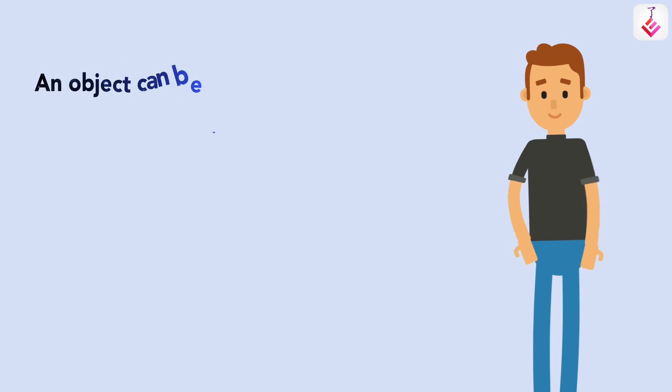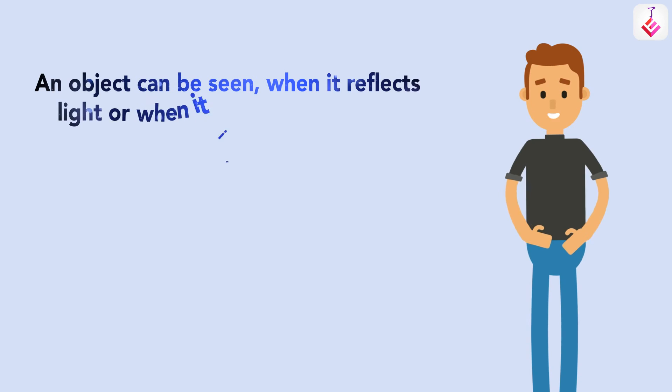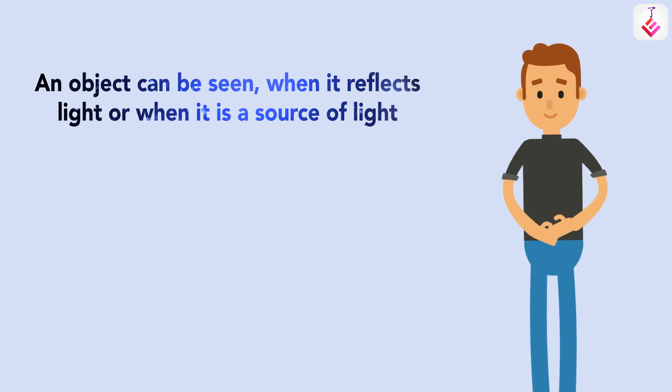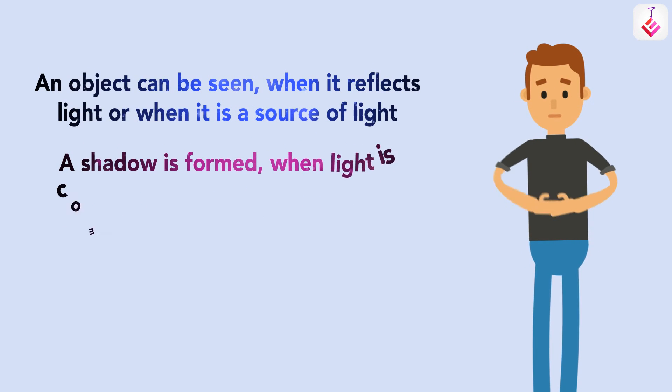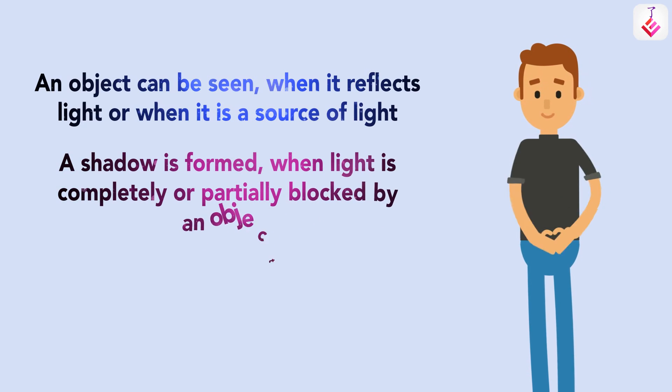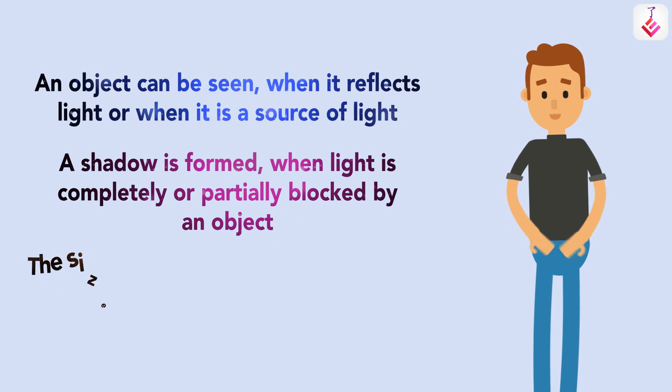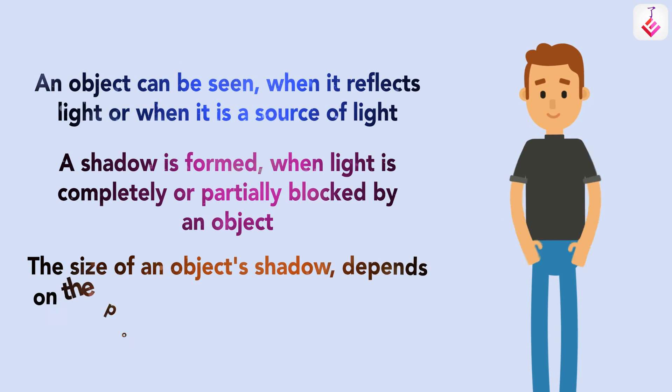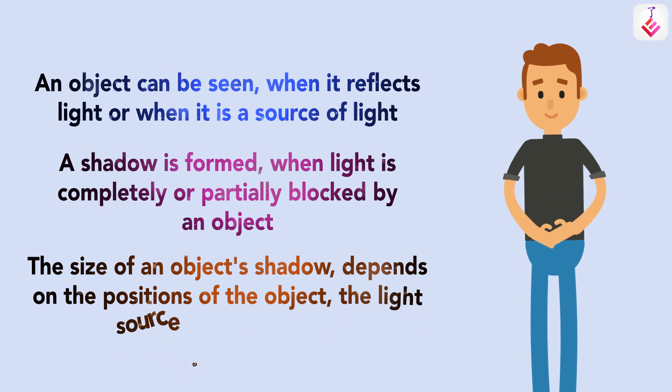So, what have we learned today? An object can be seen when it reflects light or when it is a source of light. A shadow is formed when light is completely or partially blocked by an object. The size of an object's shadow depends on the positions of the object, the light source, and the screen.